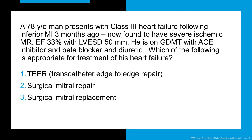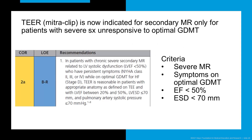For a patient with class III heart failure following an inferior myocardial infarction, severe ischemic mitral regurgitation, reduced ejection fraction, and increased end-systolic dimension despite guideline-directed medical therapy, the recommended treatment is transcatheter edge-to-edge repair — the MitraClip. Based on randomized trials, this is now indicated for secondary mitral regurgitation with severe symptoms unresponsive to optimal medical therapy if ejection fraction is reduced and end-systolic dimension is less than 70 mm.